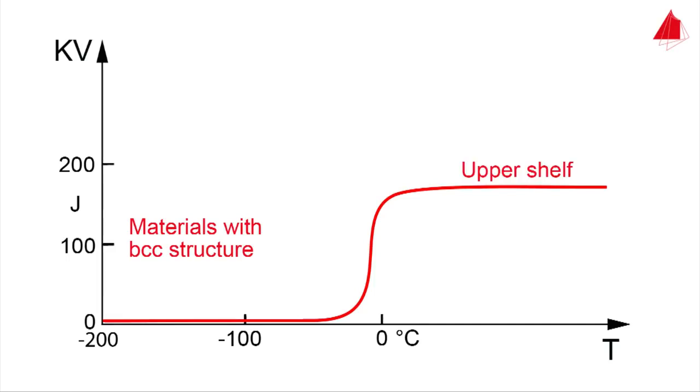In the so-called upper shelf region, the material absorbs a lot of energy and behaves in a tough manner. At low temperatures in the lower shelf region, only a small amount of impact energy is absorbed and brittle fractures occur.